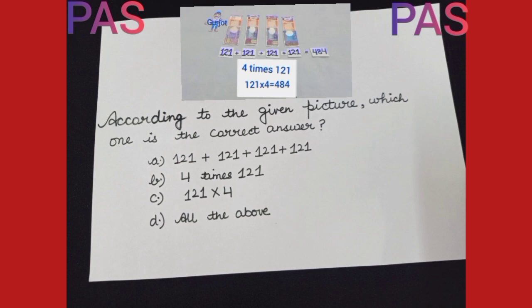Students, all of us know, there are 4 members in Gurjot's family. And each member gave him Rs. 121. So option A, 121 plus 121 plus 121 plus 121 is correct.